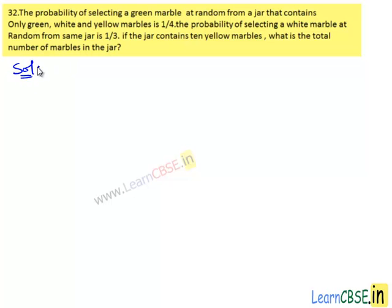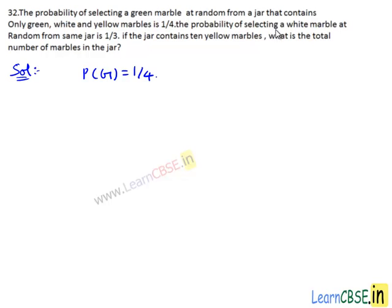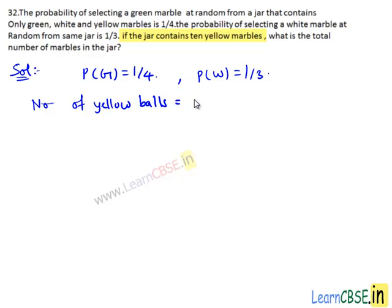Moving on to the solution. Let us note down the given information. The probability of selecting a green marble at random from a jar is 1/4, that is P(G) = 1/4. The probability of selecting a white marble at random from the same jar is 1/3, that is P(W) = 1/3. The jar contains 10 yellow balls. We need to find the total number of marbles in the jar. Let the total number of marbles in the jar be x.